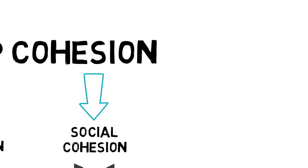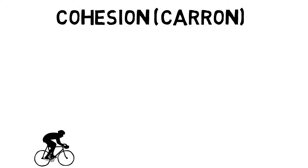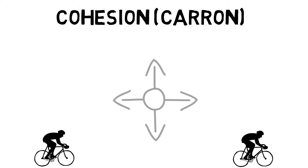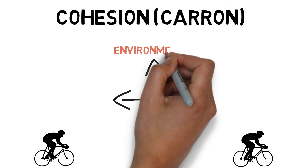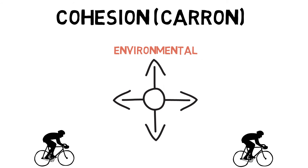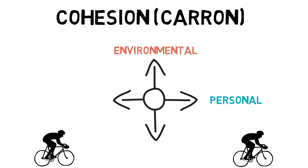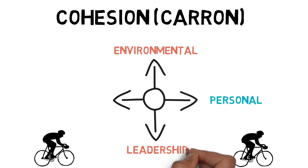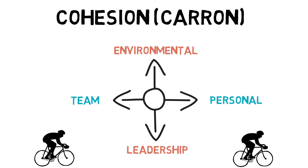Carron's model explains four factors that affect the development of cohesion. Environmental factors, which bind members together such as contracts, age or nationality. Personal factors, which bind members together through collective motives and values. Leadership factors, which are about the behaviour of leaders and coaches. And team factors, relating to the group such as identity or member ability.